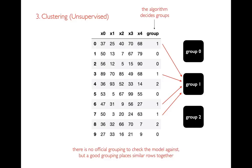That doesn't mean all groupings are equal. I can measure within a group how similar those rows are to each other, and my goal is to have a grouping that maximizes similarity within each group. There might be different groupings that are equally good, but as long as similarity within groups is high, I still learn something meaningful. For example, maybe each row represents a different user for my web application. If I can identify ten different kinds of users, I could run a different marketing campaign for each group. Clustering is unsupervised because there's no label column I'm trying to predict.